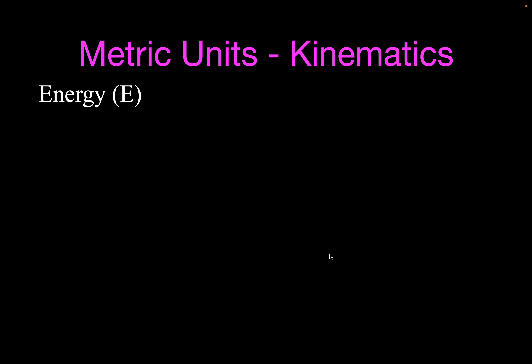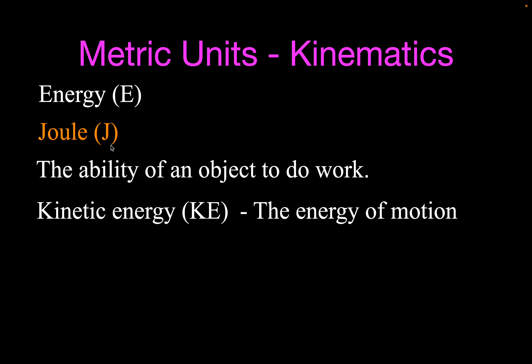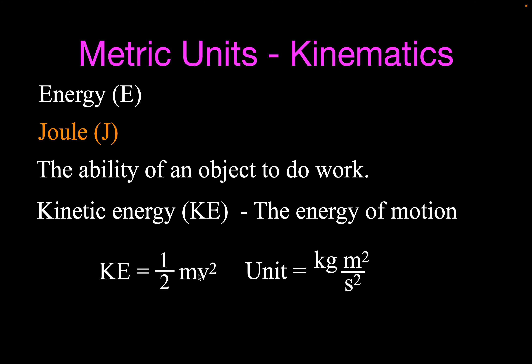Now we have energy. The units for work and energy are the same — the joule. Energy is the ability of an object to do work; when an object does work, it uses up some of its energy. We'll talk about two kinds of mechanical energy: kinetic and potential. Kinetic energy is the energy of motion, calculated as one half mv squared. In order to have kinetic energy, an object must have mass and be moving. You can verify the unit works out to a joule: mass in kilograms times velocity squared in meter squared per second squared gives kilogram meter squared per second squared — a joule.